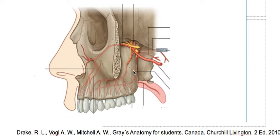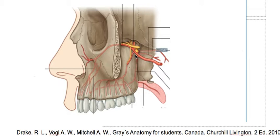Now we're going to see the arteries, veins, and nerves of the nasal cavity and paranasal sinuses. Here we have the maxillary artery. The maxillary artery is a branch of the external carotid artery, located in the pterygopalatine fossa, and gives rise to six arteries.